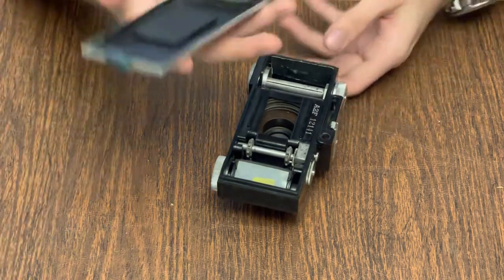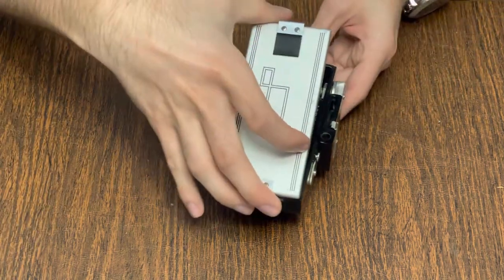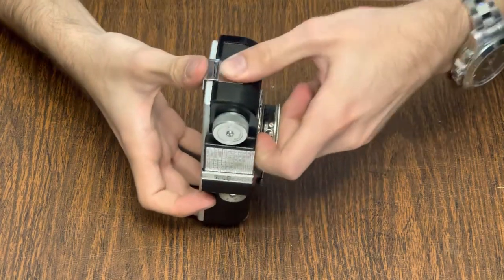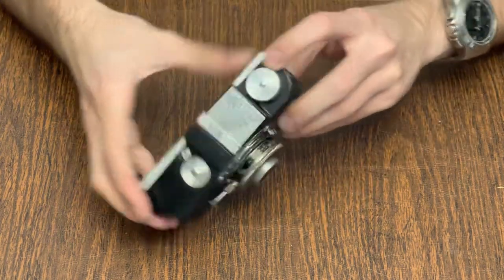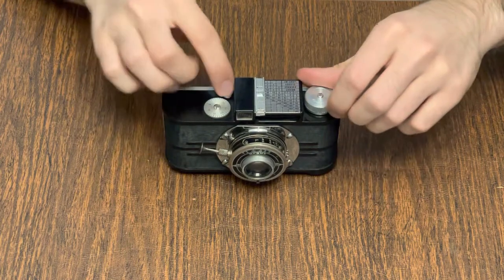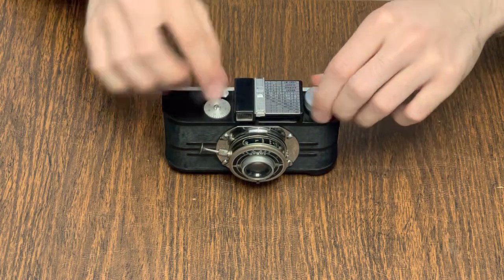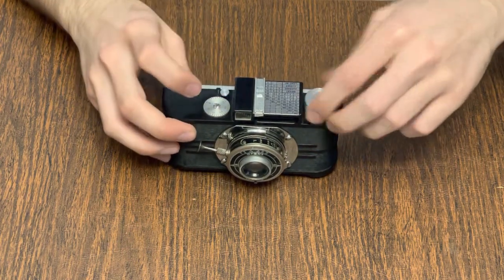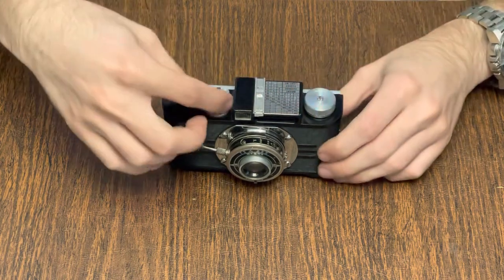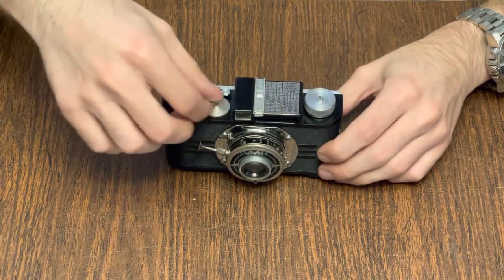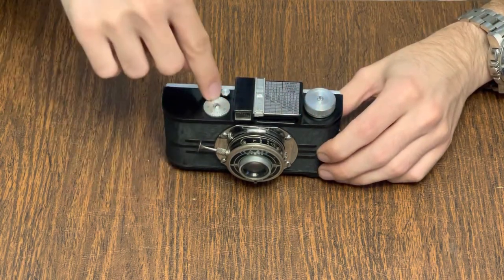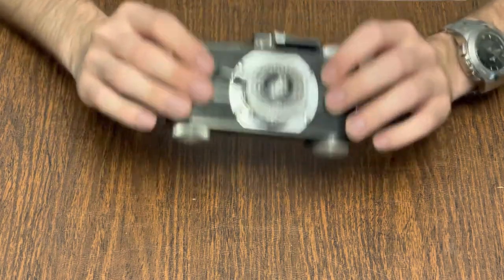Then the back can be placed back on, the latch depressed and made sure that it latched in place. Now press the film release button and wind on two frames until it stops. Then rotate the film counter knob until it's zero. Now you're ready to take pictures with the A2F.